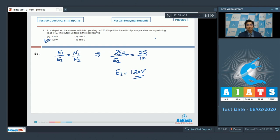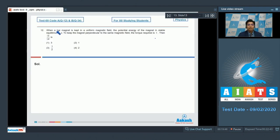Now let us solve question number 12. Question number 12 says, when a bar magnet is kept in a uniform magnetic field, the potential energy of the magnet in stable equilibrium is X. To keep the magnet perpendicular to the same magnetic field, the torque required is T vector. Then, the magnitude of T vector by X is: